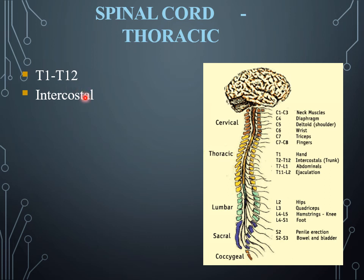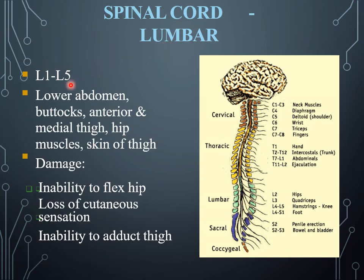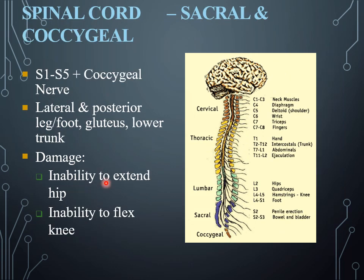The thoracic nerves are 12 in number from T1 to T12 and are the intercostal nerves. The lumbar nerves are five in number from L1 to L5. They supply the lower abdomen, buttock, anterior and medial thigh, and hip. Damage to the lumbar nerves can result in the inability to flex the hip, loss of cutaneous sensation, and inability to adduct the thigh.